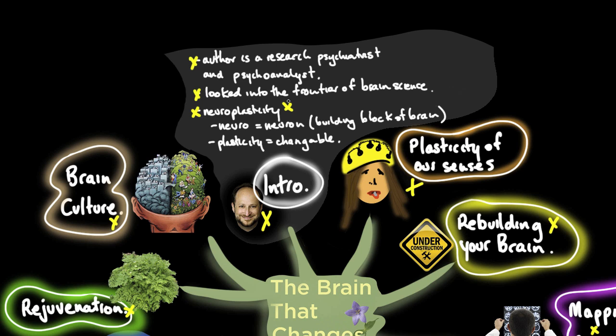Neuroplasticity is really two terms: neuro, short for neuron, the basic building block of the brain, and plasticity, referring to changeable. This is a revolution or paradigm shift of how to look at the brain. It's no longer considered a machine or mechanistic view.